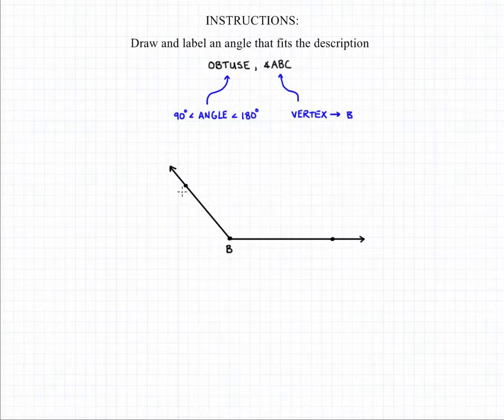We can place B there and then add our A and our C. And we have our final answer, an obtuse angle labeled ABC.